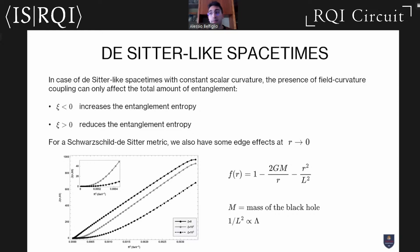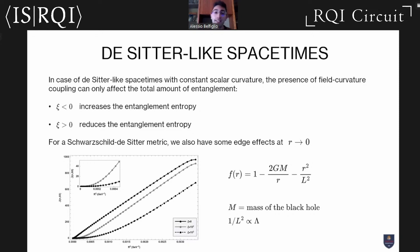If we consider a de Sitter-like spacetime where the scalar curvature is constant — as in the Schwarzschild–de Sitter case — the field-curvature coupling adds a constant term to the total entropy. It is effectively like an additional mass-like term in the Hamiltonian, so it cannot modify the area-law behavior. We can only modify the total amount of entanglement: a positive coupling constant reduces entanglement because the effective mass is higher, and a negative coupling increases it.